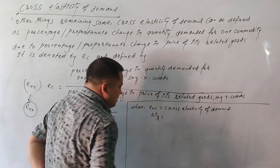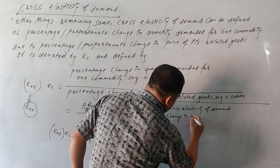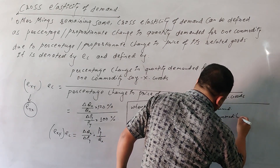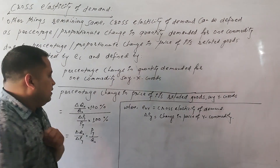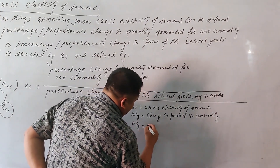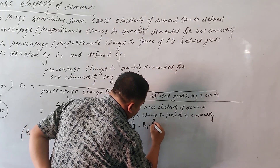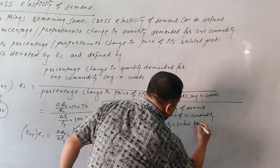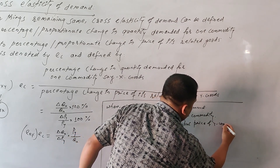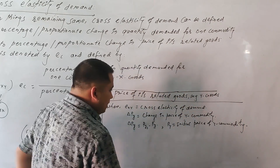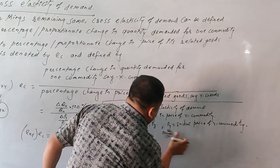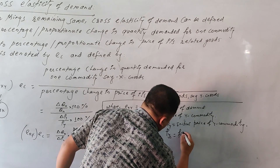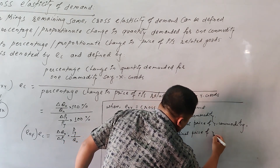Change in PY means change in price of Y commodity, or Y goods. The change in PY value equals PY2 minus PY1, where PY1 is the initial price of Y commodity and PY2 is the final price of Y commodity.